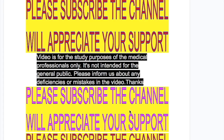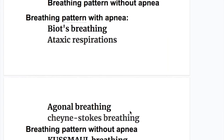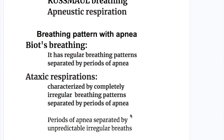In this video we will discuss abnormal breathing patterns with apnea and abnormal breathing patterns without apnea. The abnormal breathing patterns with apnea are Biot's breathing, ataxic respiration, agonal breathing, and Cheyne-Stokes breathing. Breathing patterns without apnea are Kussmaul breathing and apneustic breathing.